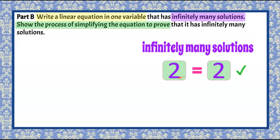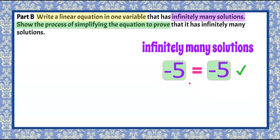We all know that 2 equals 2. It could also be something like negative 5 equals negative 5. As we go through the process of solving, we eliminate the variable terms — there will be no X left — and we'll have a true numerical statement. To write our linear equation in one variable, we'll write an algebraic expression with an X that is equal to itself, and that will result in infinitely many solutions.